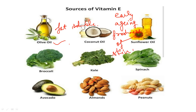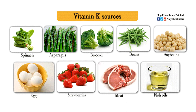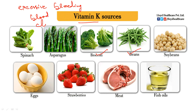The next vitamin is Vitamin K, which is also fat-soluble. Green leafy vegetables like broccoli, beans, cabbage, and methi are the richest sources of vitamin K. Vitamin K prevents excessive bleeding and helps in blood clotting, also known as blood coagulation. It helps to reduce the loss of blood in our body.